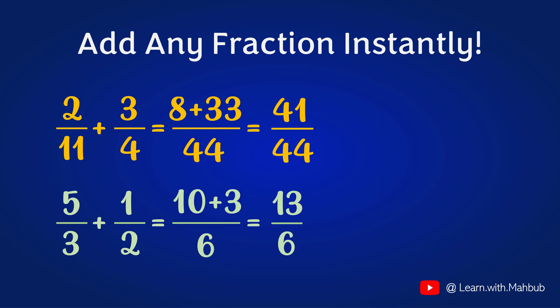The second one, it will be 10 plus 3, 13 by 2 times 3, 6. Let's simplify it. 6 times 2 is 12 and 1 remainder. So 2 and 1 sixth.